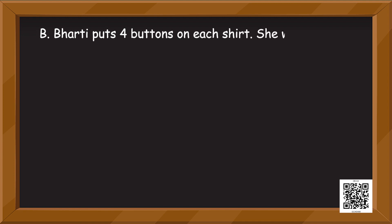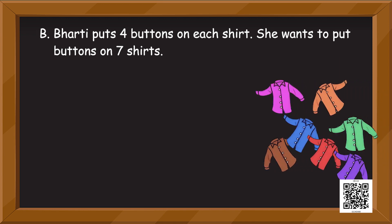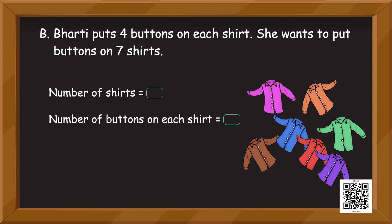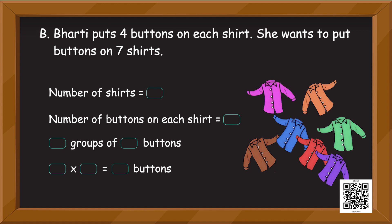Bharati puts four buttons on each shirt. She wants to put buttons on seven shirts. Can you see these seven colorful shirts on your screen? Total number of shirts is equal to — count. Number of buttons on each shirt is equal to — count one shirt, since the number is the same for all. Now can you tell me the total number of buttons on these seven shirts? Do it slowly, remembering the tables we did.